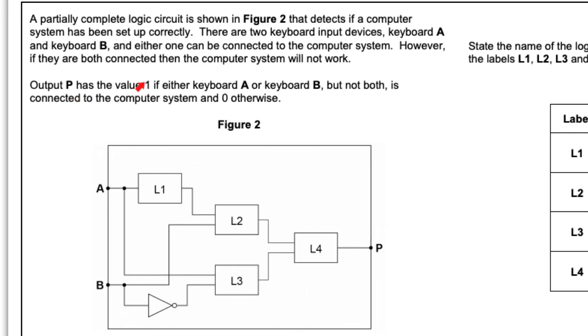Output P has a value of 1 if either A or B, but not both, is connected to the computer system, and 0 otherwise.